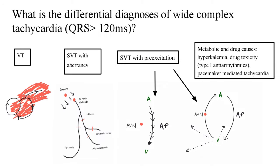What is the differential diagnosis of wide complex tachycardia, which is to say a QRS duration of more than 120 milliseconds? Broadly, there are four causes. One is ventricular tachycardia. Second is supraventricular tachycardia with aberrancy. Third is supraventricular tachycardia with pre-excitation. And fourth, metabolic and drug causes — more commonly hyperkalemia, drug toxicities secondary to type 1 antiarrhythmics, and in some cases pacemaker-mediated tachycardia.